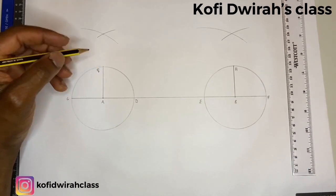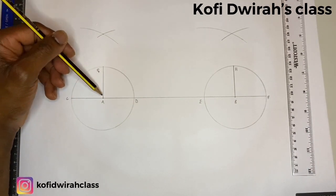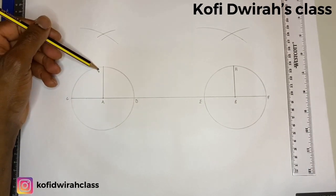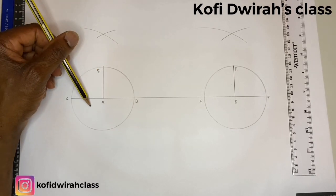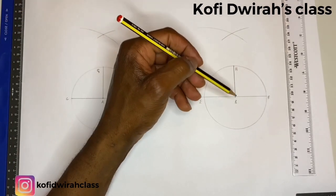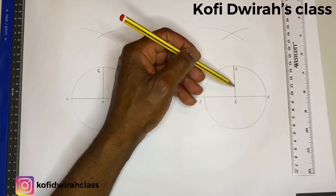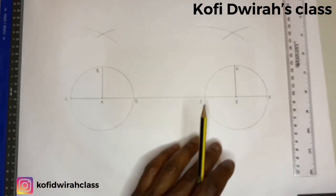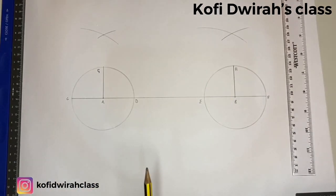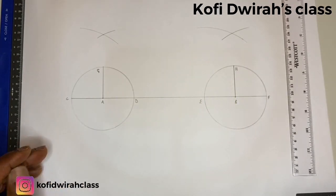So we have our normal — we have AG, that's the normal for this circle, and we have BH, the normal for the other circle.